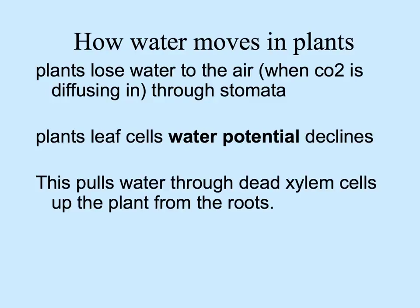What affects how water moves in plants is something called water potential. As stomata are open for carbon dioxide to come in for photosynthesis, water vapor evaporates easily out. When leaf cells become drier or have less water in them, their water potential declines, and water is then pulled up through the xylem tubes into the plant from the roots.